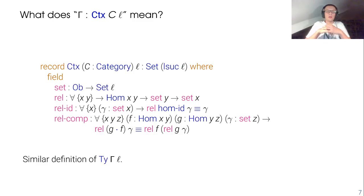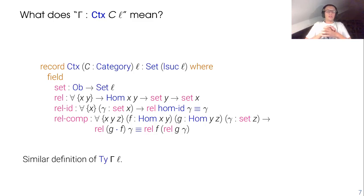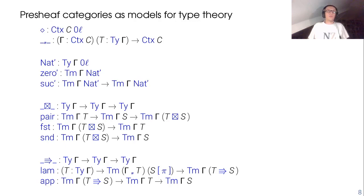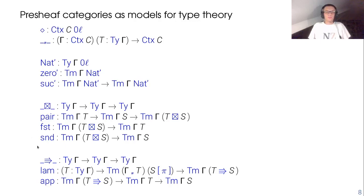In a very similar way, we can define the Agda type of types in a certain context gamma, and also the Agda type of terms of a certain type T in a certain context gamma. Now we have defined the Agda type of contexts, of types, and of terms. But actually you can do much more than that, because it's well known that every pre-sheaf category is a model for type theory. So we can define an empty context for any base category C, we can define context extension, basic types like the type of natural numbers with terms like zero and successor, and simple product types and non-dependent function types.